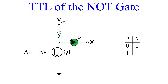Now let's apply a voltage to the input at A. We can now see that transistor Q1 has turned on. The current flows through that transistor straight to ground. Now our LED is turned off, indicating a low output. So for an input of one, the output is zero.